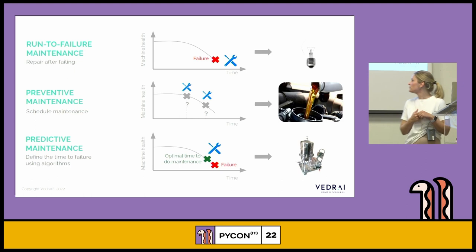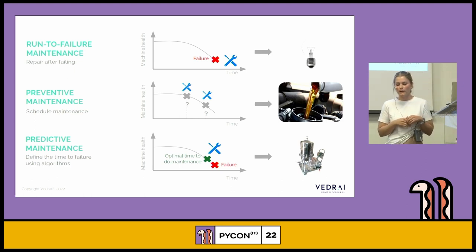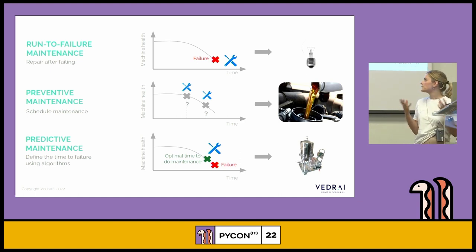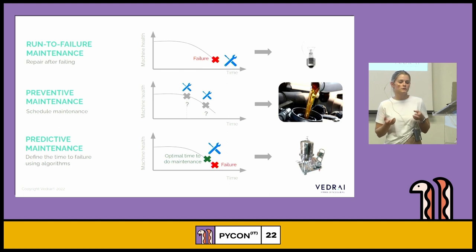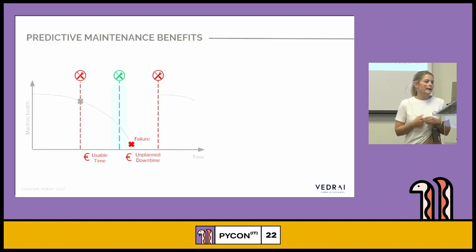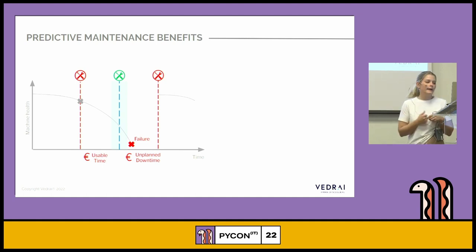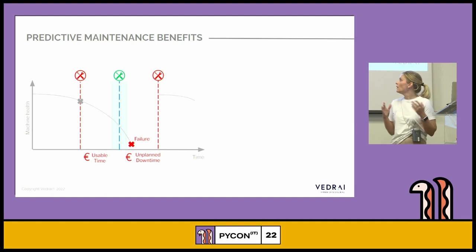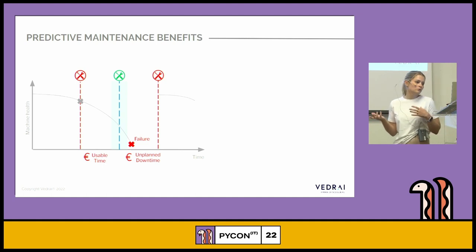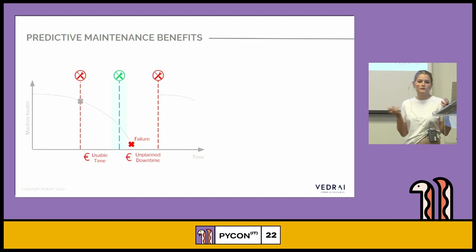The last one is predictive maintenance. Here we try to analyze the health of the machine according to all the sensor values and predict the optimal time to do maintenance. The main challenge is getting this timing right — if we predict too early we have unusable time and increased cost; if we predict too late we have a breakdown and increased downtime.